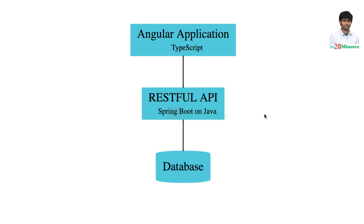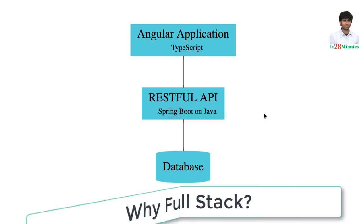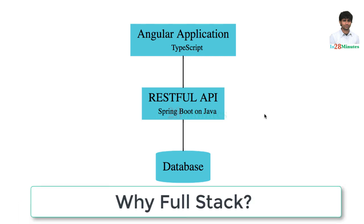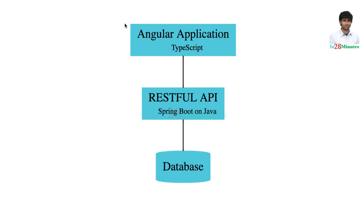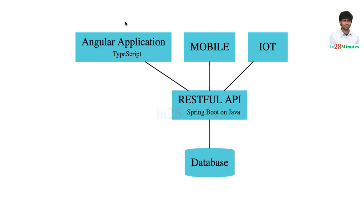Before we move on, let's discuss an important question: why should you really build a full-stack application? Why create a separate back-end and a separate front-end? There is a lot of complexity associated with building separate back-ends and front-ends — you need to understand multiple languages and frameworks like Spring Boot and Angular. The most important reason is to create a flexible architecture which can be extended to meet future needs.